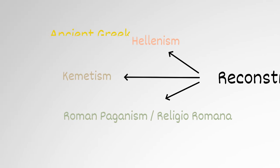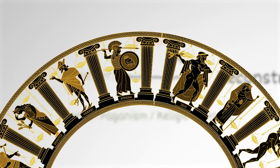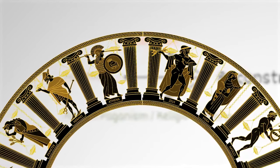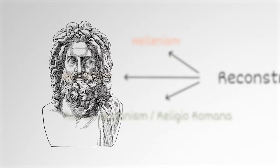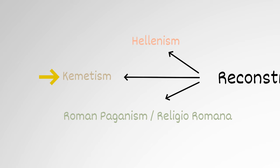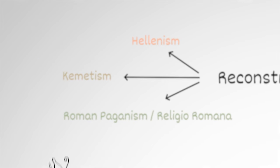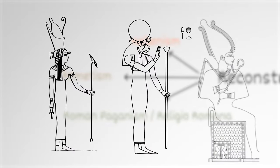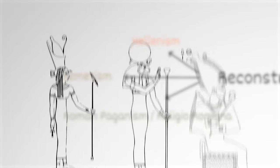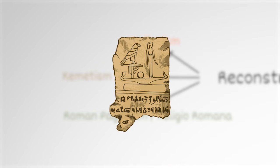Hellenism focuses on the ancient Greek religion, worshipping gods of the Greek pantheon like Zeus, Hera, and Athena. It celebrates Greek culture and the wisdom of the ancients. Kemetism highlights the ancient Egyptian religion, honoring gods like Isis, Ra, and Osiris. They use Egyptian rituals and magic and take inspiration from hieroglyphs and temples.